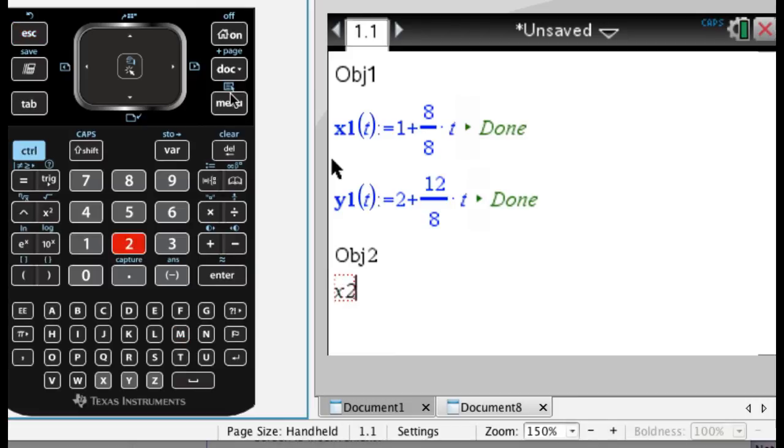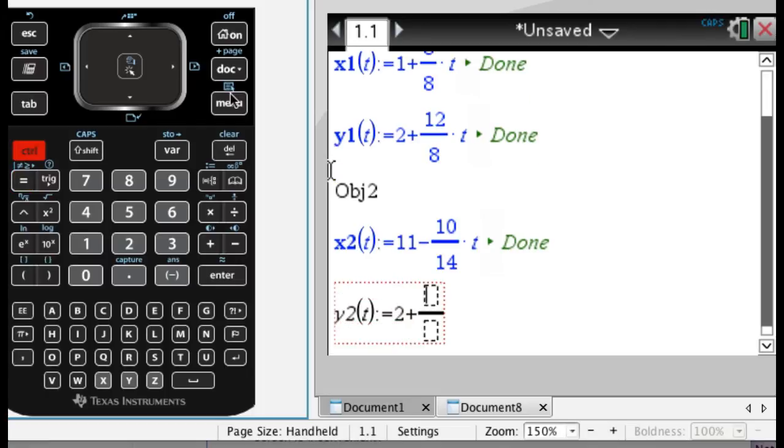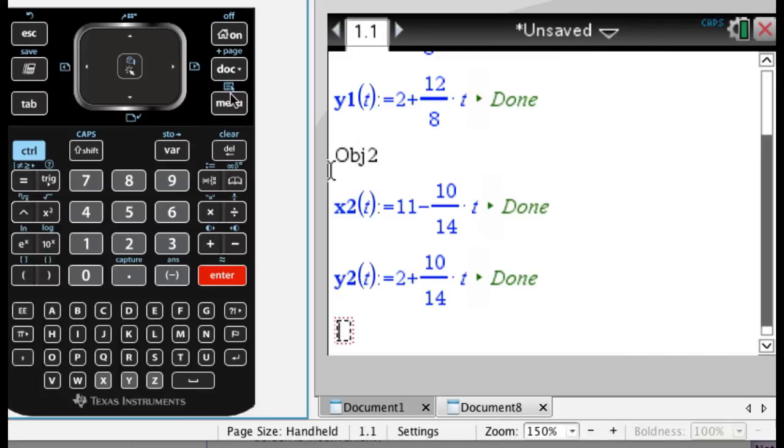Now I'm going to do x2(t) and set it equal to, let's go with 11 and then minus 10/14*t. And y2(t) I'm going to set equal to, I'm just defining some functions here, 2 plus 10/14*t. Okay, so now I have object 1 object 2.